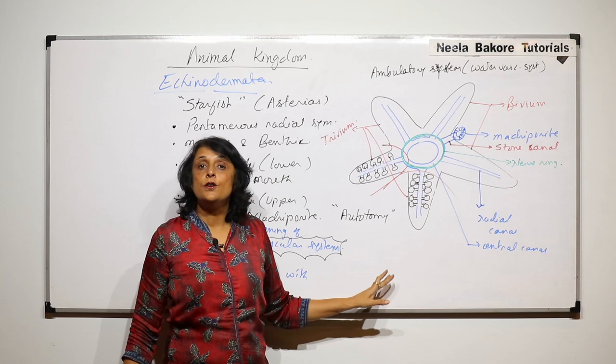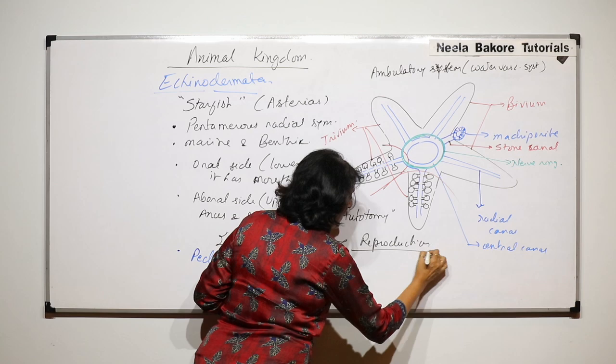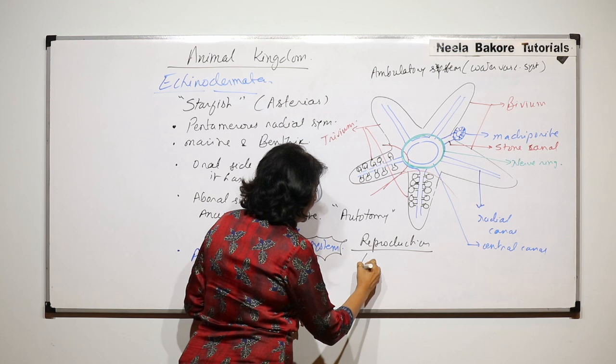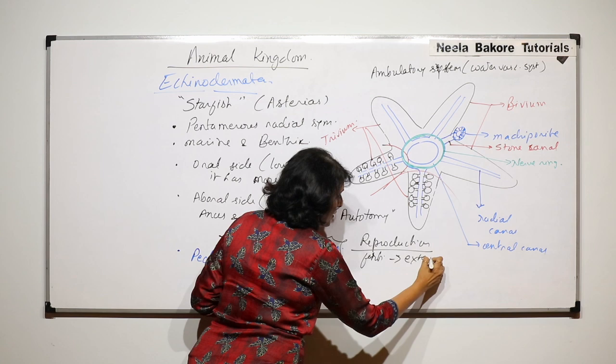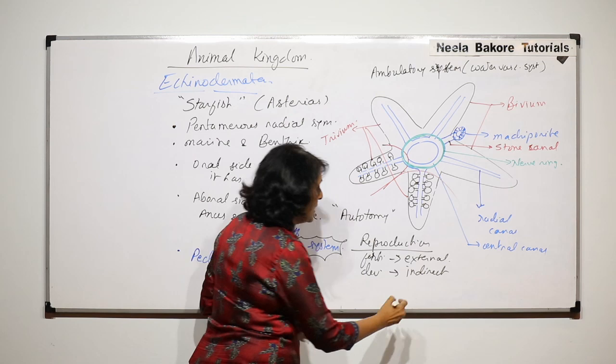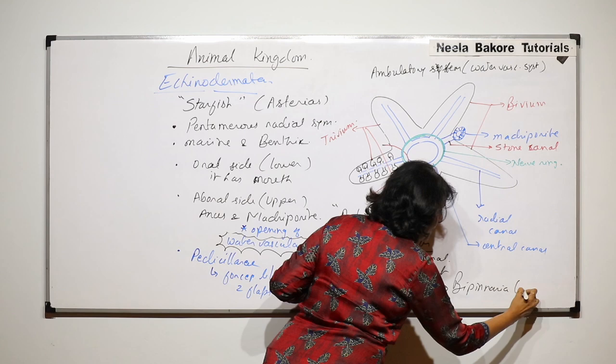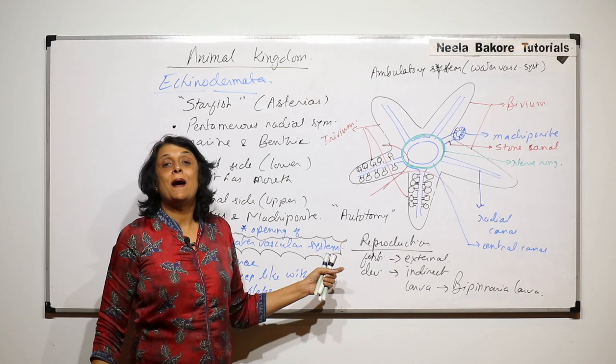In case of starfish, reproduction is pretty much common like other animals. Fertilization is mostly external and development is indirect. Whenever we use the word indirect, that means there is a larval stage. The most common type of larva seen here is the Bipinnaria larva. The larva is free swimming and it is bilaterally symmetrical.